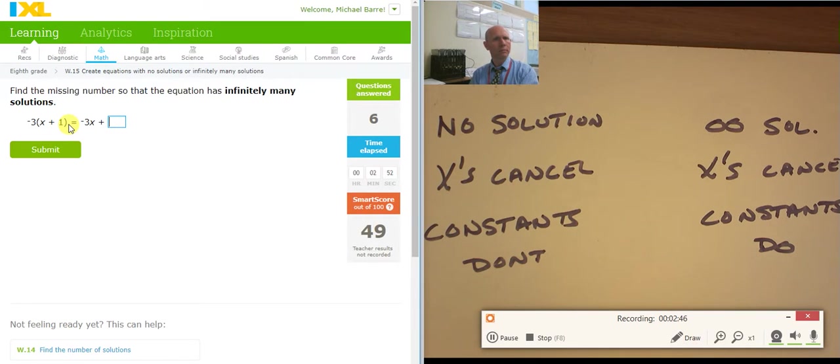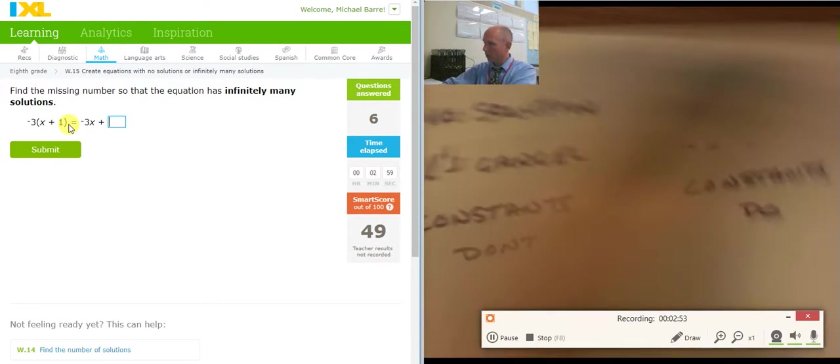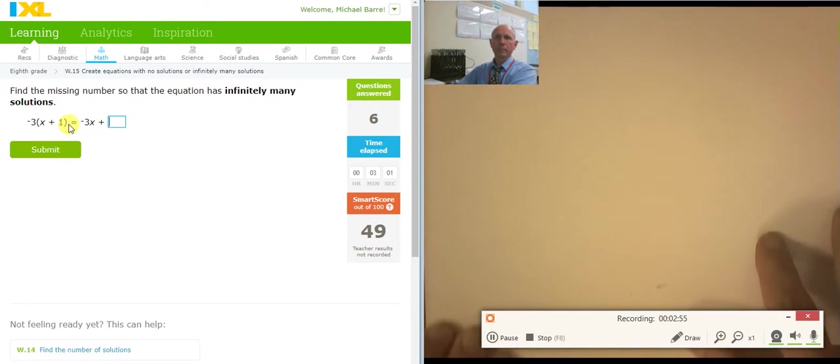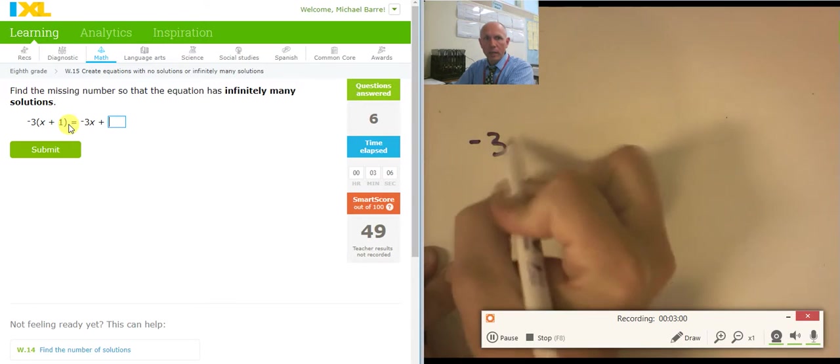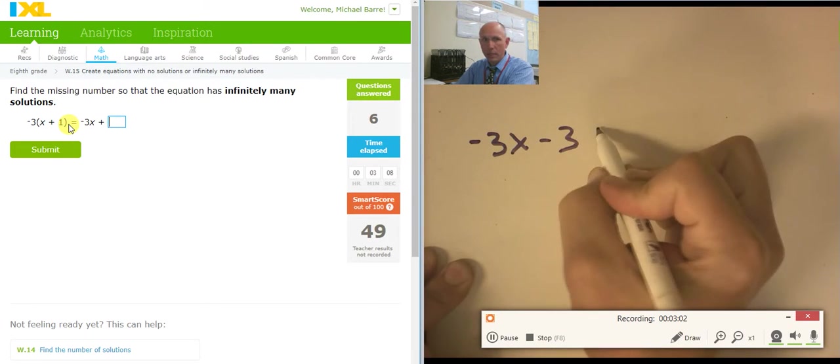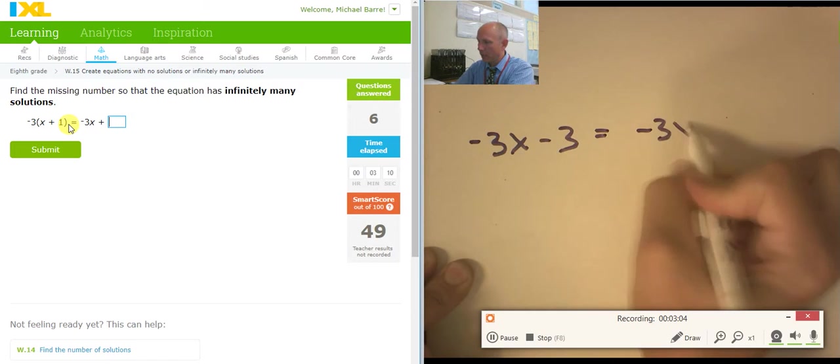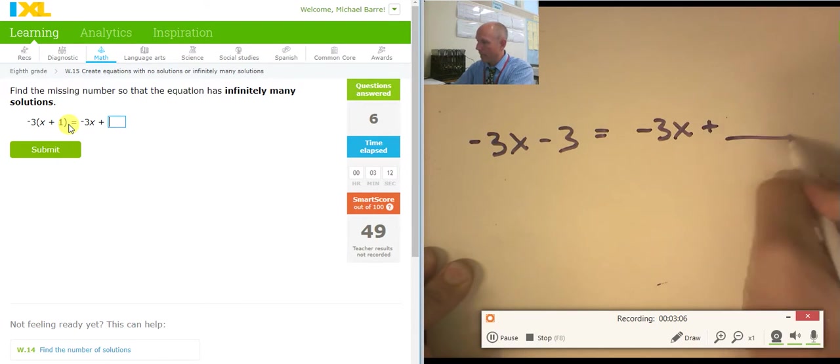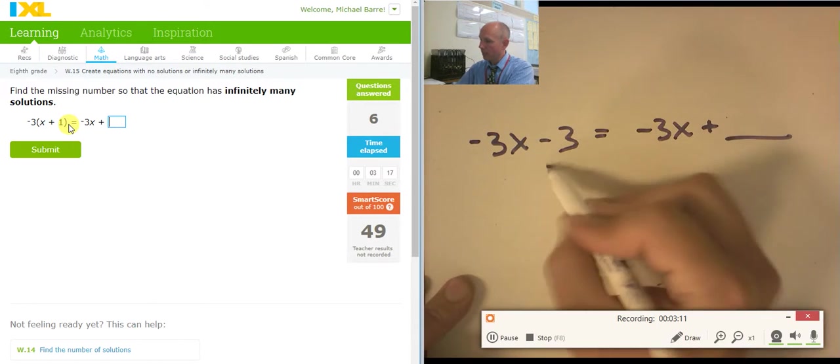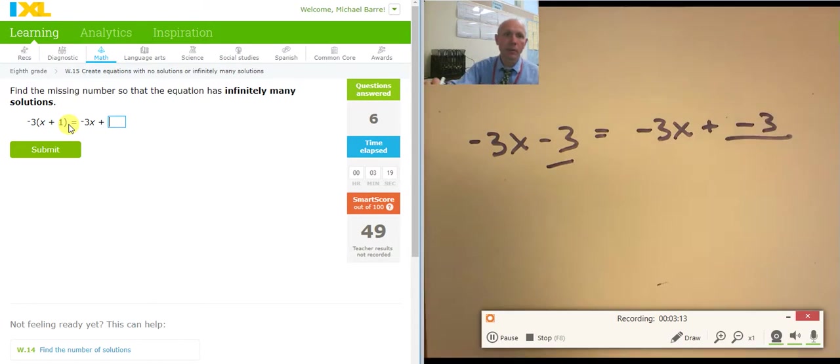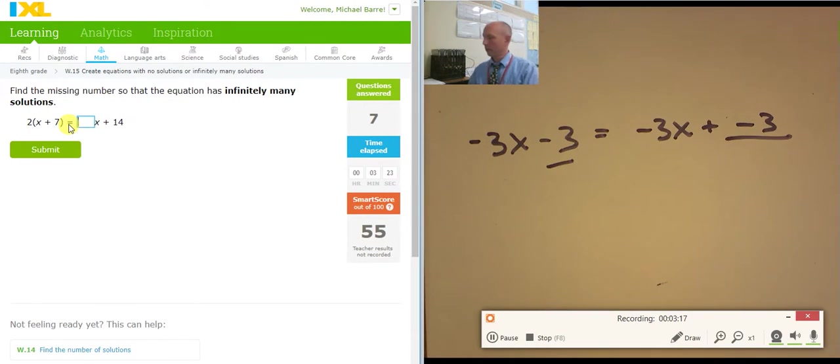Ooh. I had not anticipated this. I'm going to come to the whiteboard now just because it's easier than drawing sometimes. I'm going to distribute. So that's going to give me negative 3x minus 3 equals negative 3x plus blank. What do I want to happen? Infinite equations or infinite solutions. That means the negative 3 has to be over here also. So it's negative 3.